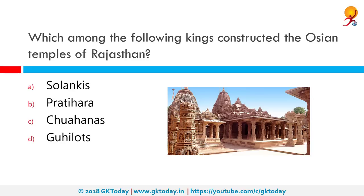Which among the following kings constructed the temples of Osian in Rajasthan? Osian is an ancient town located in the Jodhpur district of Rajasthan, known as the Khajuraho of Rajasthan for its temples. It is famous as home to a cluster of ruined Brahmanical and Jain temples dating from the 8th to 11th century. It was a major religious center during the Gurjar Pratihara dynasty. The correct answer is Pratihara.